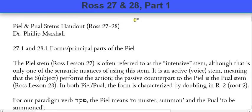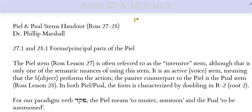Let's cover the Ross Chapter 27 and 28 material. This covers the two stems known as the Piel and the Pual. We took a long time introducing the Qal, then a bit of time introducing the Nifal, and here we're going to cover the Piel and the Pual together — a crash course in both. That may seem daunting, but the good news is that the Piel and the Pual are actually mirrors of each other, and once we learn the Piel, learning the Pual will be very easy because they're almost the same.